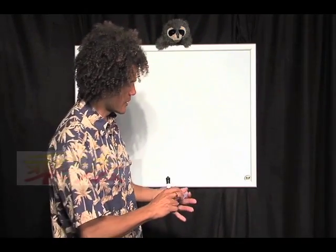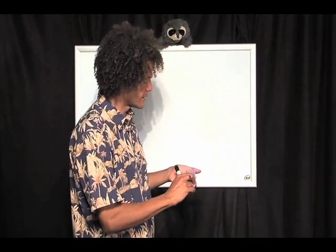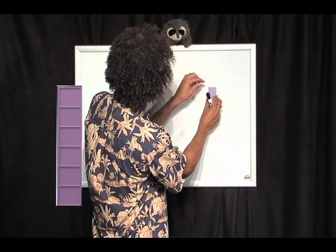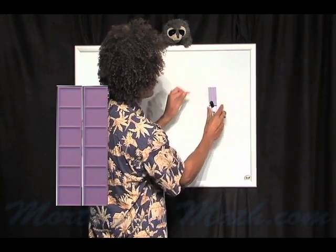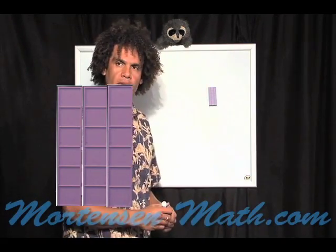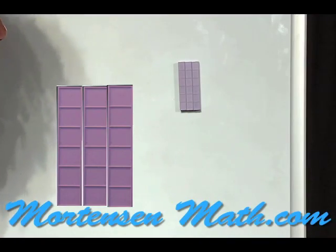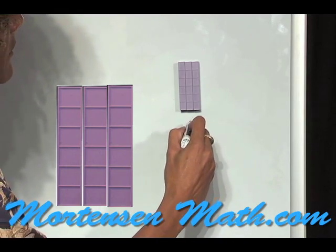Now, let's take a simple example of three sixes. Six taken three times. There it is. I have a rectangle, three sixes, six taken three times.